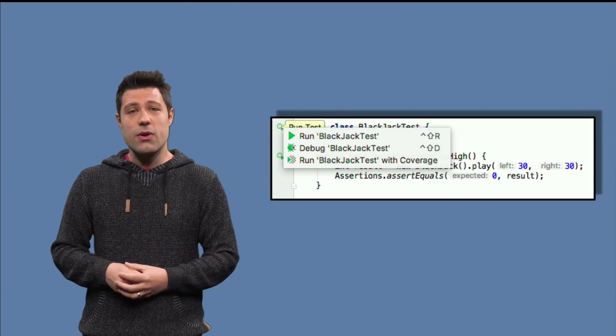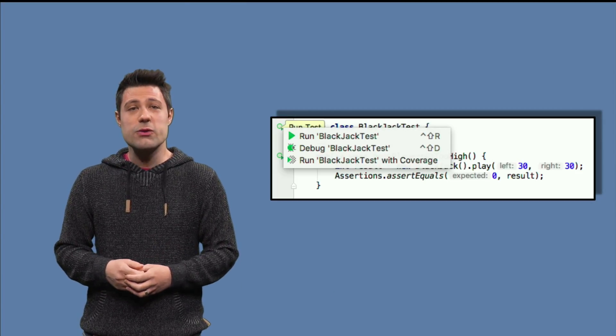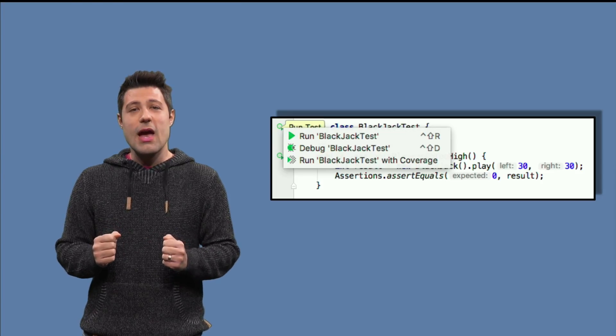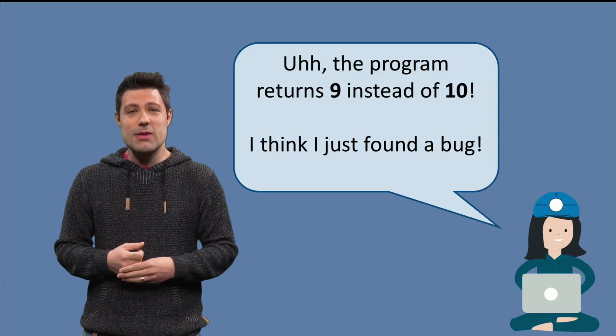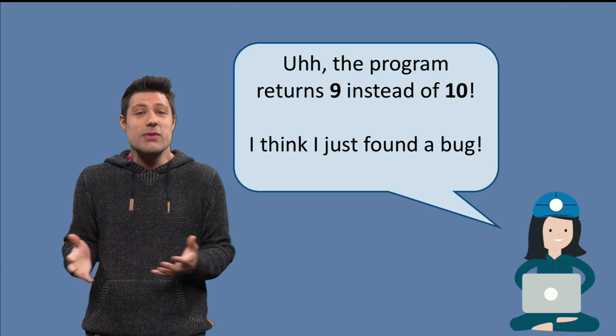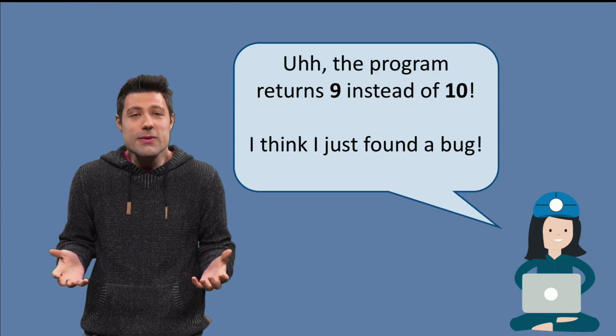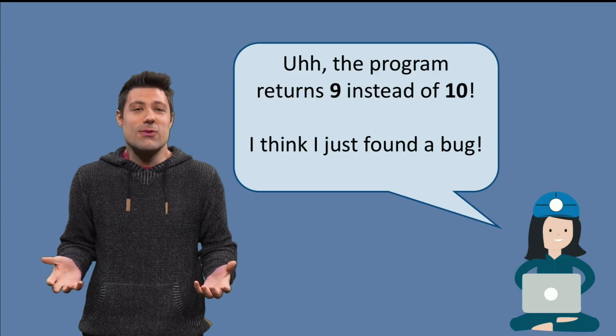If we run the test with coverage again, we now get 100% line coverage. However, our test fails. JUnit shows us that the program returns 9 instead of 10. Oops, that's a bug. But that is why we test, right?